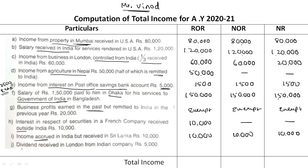Point J: Dividend received in London from an Indian company, Rs. 5,000. Indian company dividend is exempted — exempted in all 3 cases.